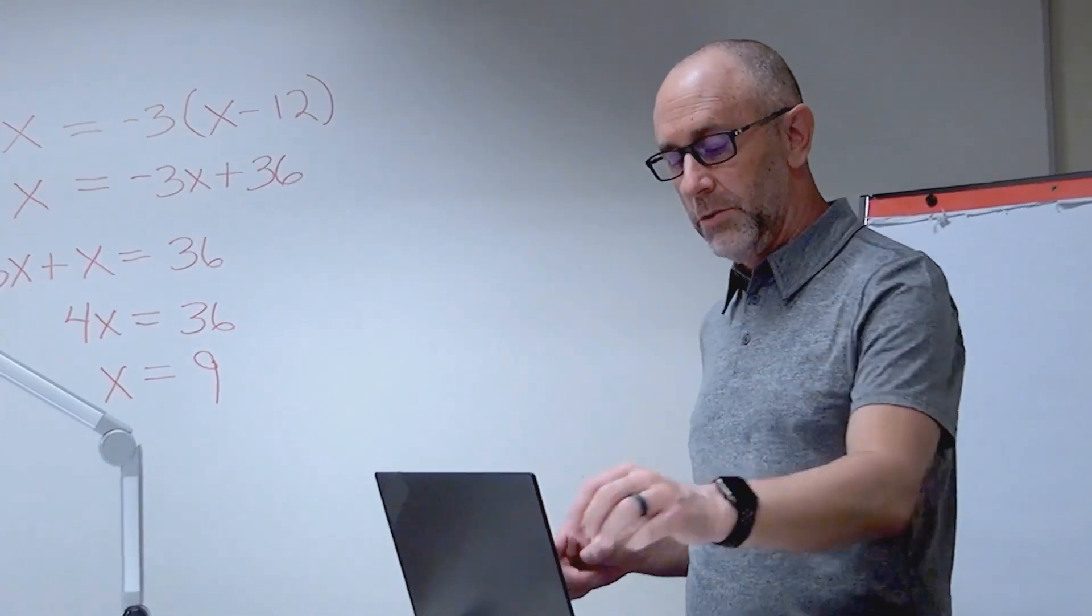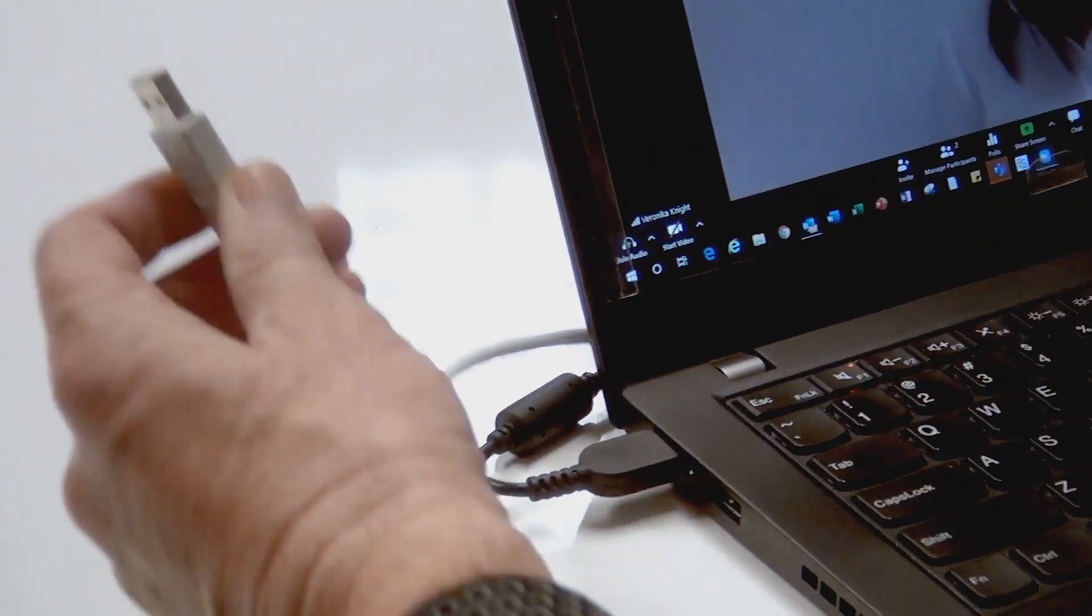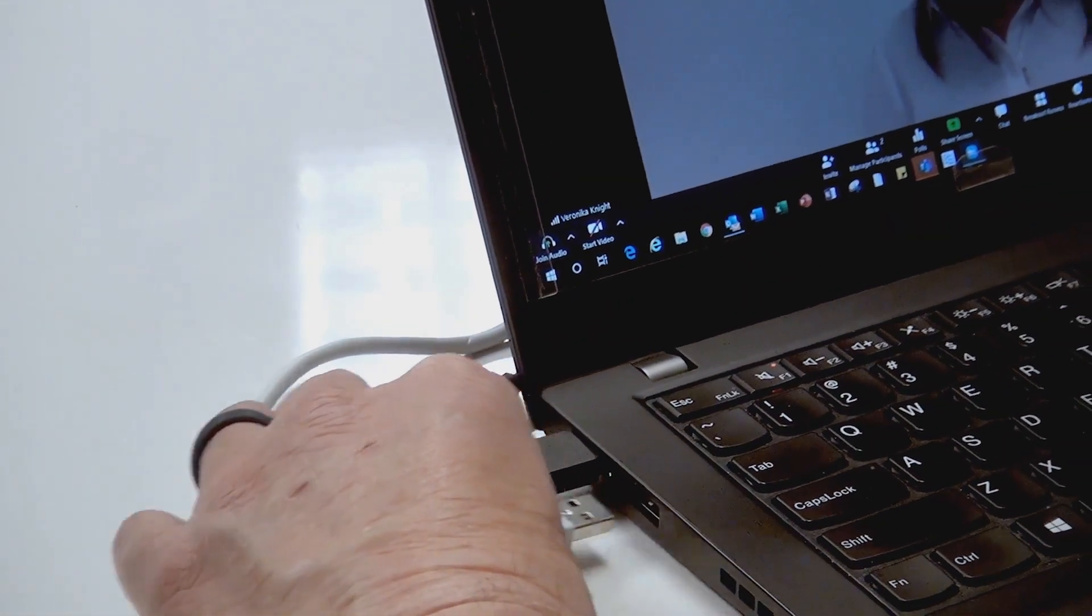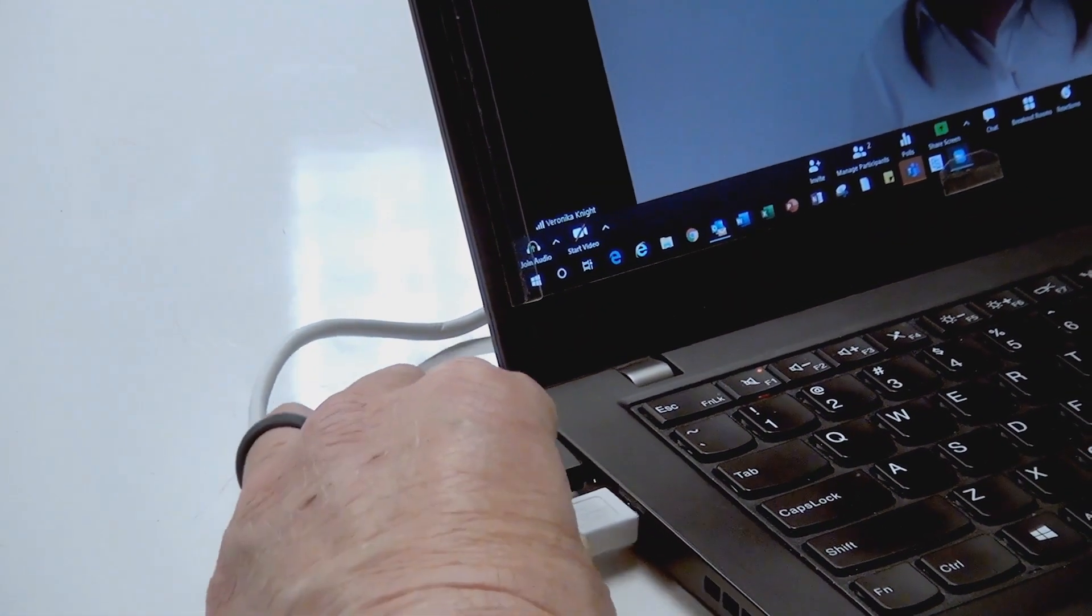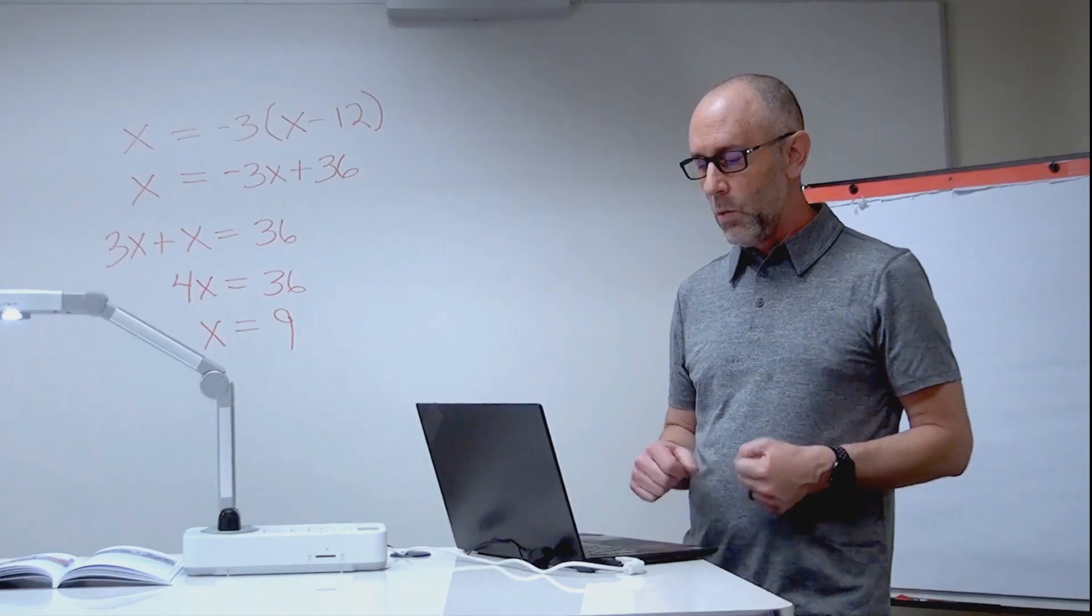First thing I'm going to do is connect the document camera itself. It's just a USB cable, and I connect it to my PC, plug it right into a USB port. Once it connects, I'm ready to go.